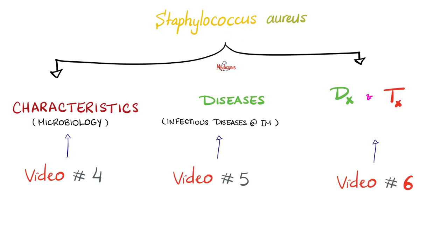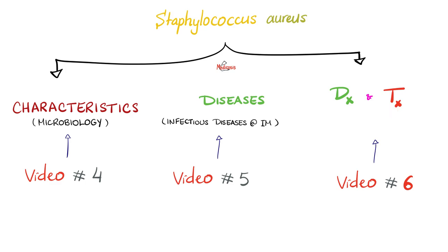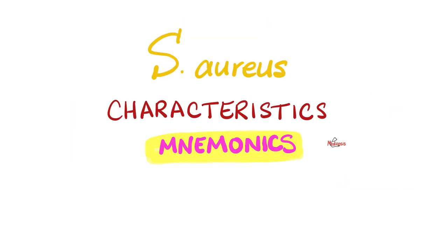This video will be very quick. If you need detailed discussion, check out the previous videos. We will divide this video into three parts. Part one: mnemonics related to the characteristics of Staph aureus. Part two: mnemonics about diseases caused by Staph aureus. And third: mnemonics with regards to treatment of Staph aureus. First, characteristics.